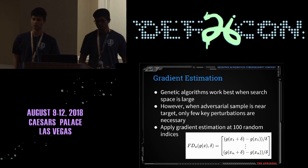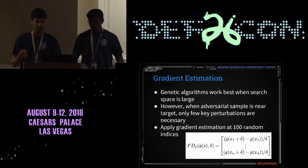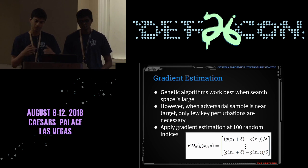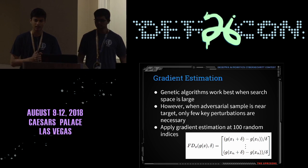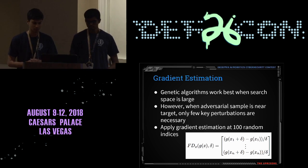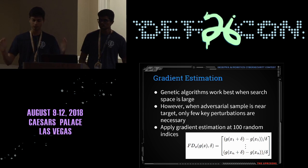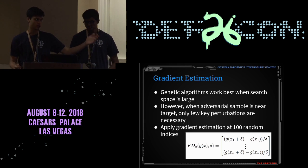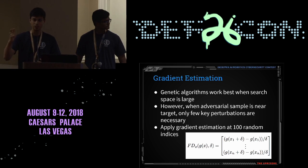The genetic algorithm approach works best when the search space is large. However, when the adversarial example is near the target, only a few key perturbations are necessary, and genetic algorithms aren't the best approach since they randomly add noise in places we don't want it. So at this step we apply gradient estimation. With a sampling rate of 16,000 Hz, a one-second audio clip has 16,000 evaluation points. For each point, we randomly perturb it up or down, pass it to the model, see the difference in scores, and combine all of these to get our gradient estimate — essentially a finite difference derivative.